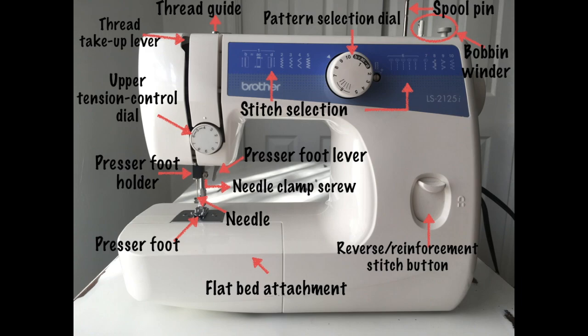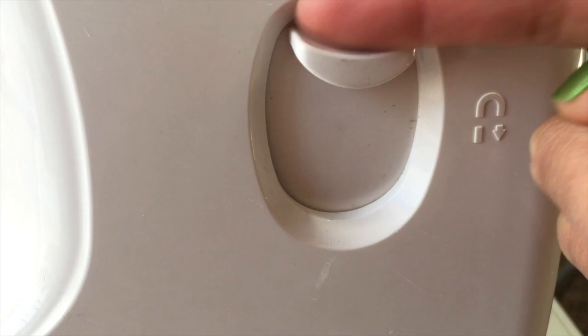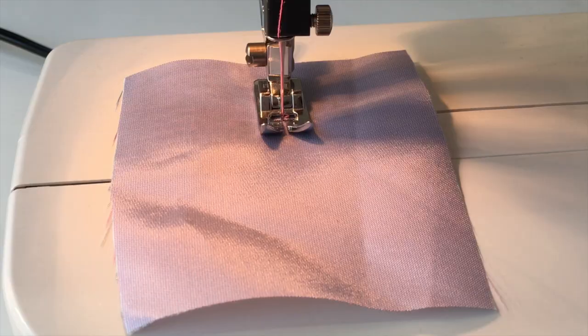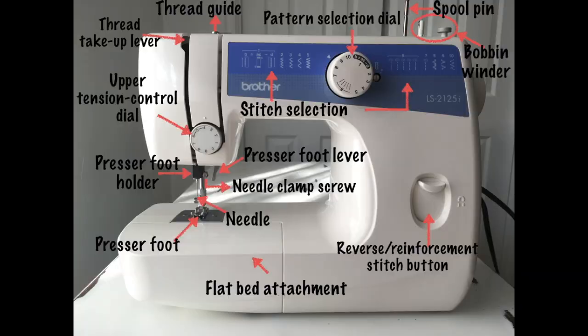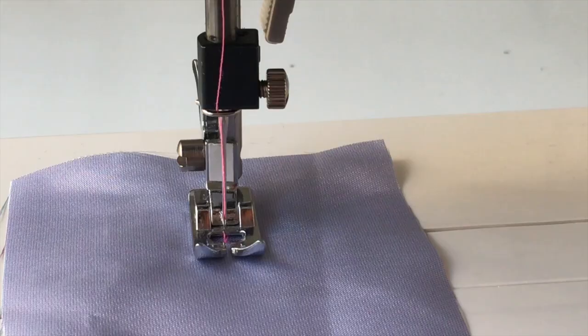Reverse or reinforcement stitch button. Reverse stitches are sewn by keeping the button pressed down to sew in the opposite direction. Hand wheel. Used to manually raise and lower the needle, and also to hand sew.